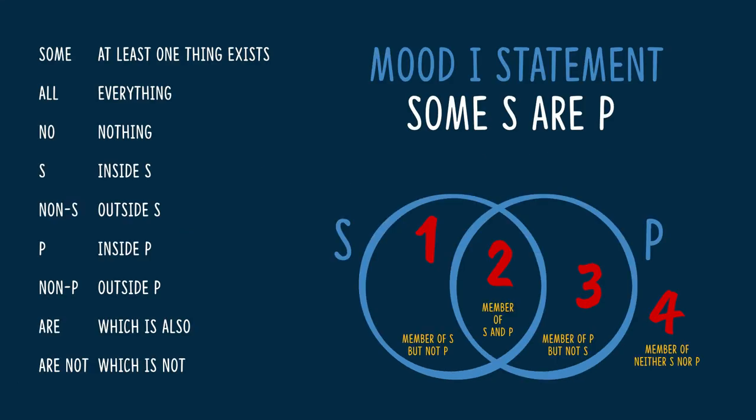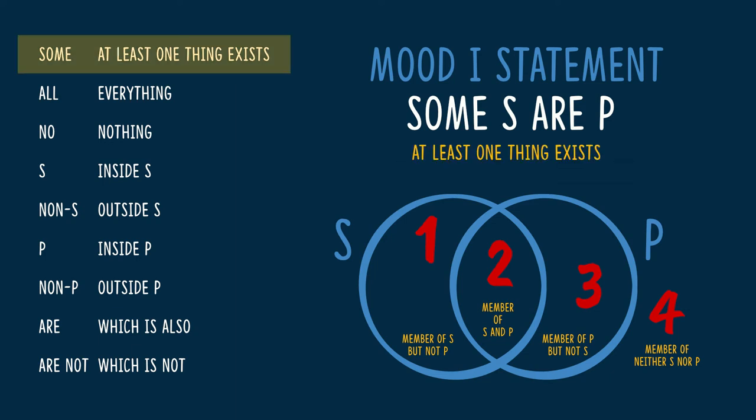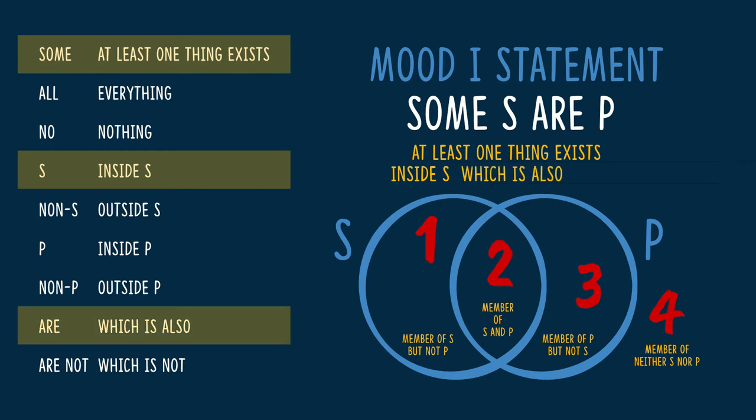For our simple example, we're going to deal with a Mood I statement. You know from our previous work that Mood I statements have the following structure: some, S, R, P. Let's build that translation table. The quantifier is some, and that's going to say at least one thing exists. The subject is S, so we say inside S. The copula is R, so we say which is also. The predicate is P — inside P.